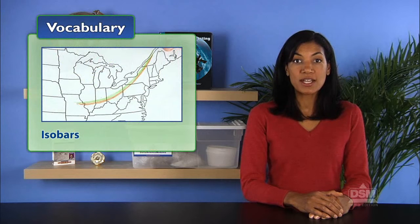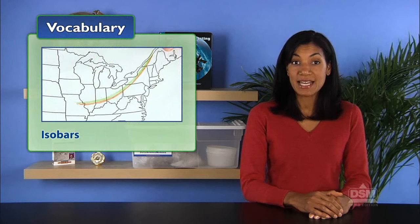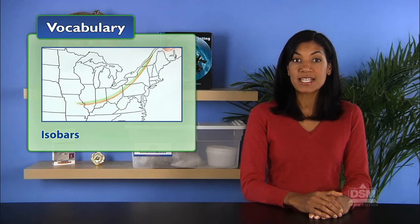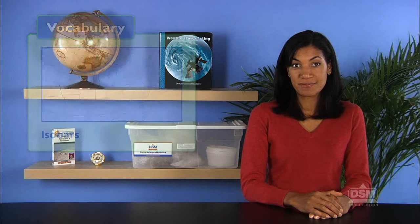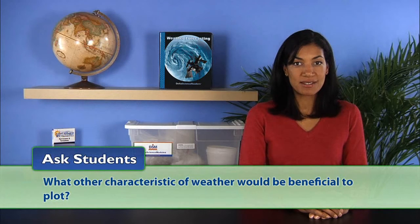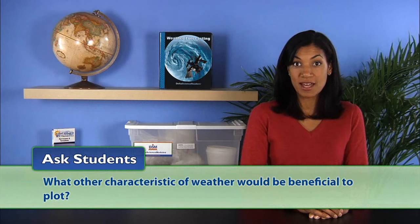Next, explain to students that isobars are lines drawn on weather maps to connect weather stations reporting the same air pressures. Ask students what other characteristics of weather would be beneficial to plot. Elicit that it may also be beneficial to plot temperature.